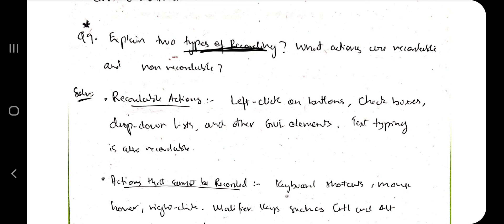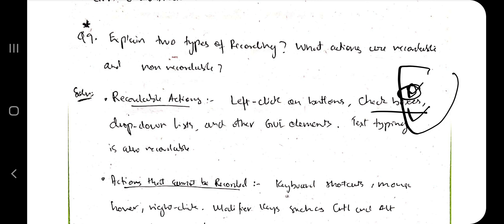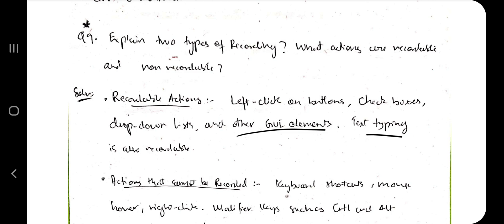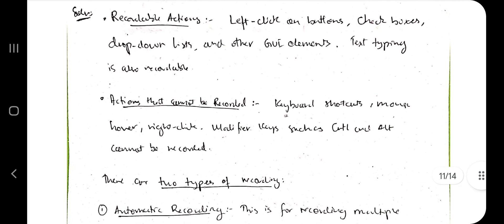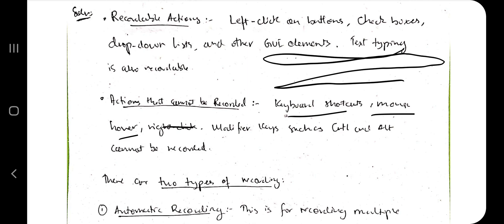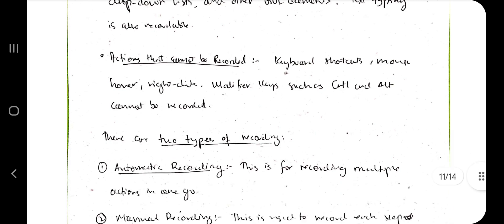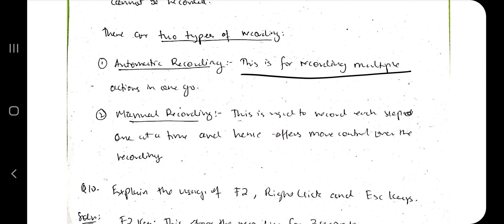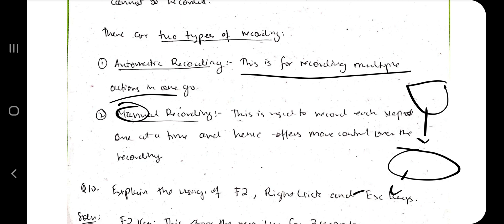There are two types of recording: automatic and manual. Before that, you may also be asked what actions are recordable. Recordable actions include: left click on buttons, clicking on images, checkboxes, drop-down lists, and text typing. Non-recordable actions include: keyboard shortcuts, mouse hover, right click, and modifier keys such as Ctrl and Alt. Automatic recording records multiple actions at once, whereas manual recording records one action at a time — like screen recording versus screenshots.